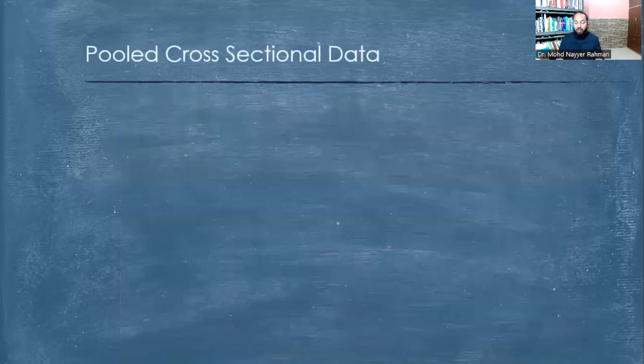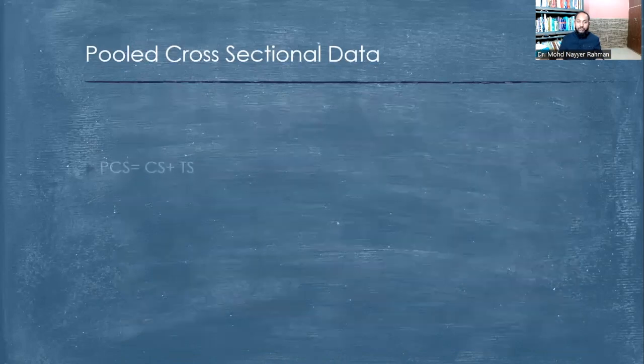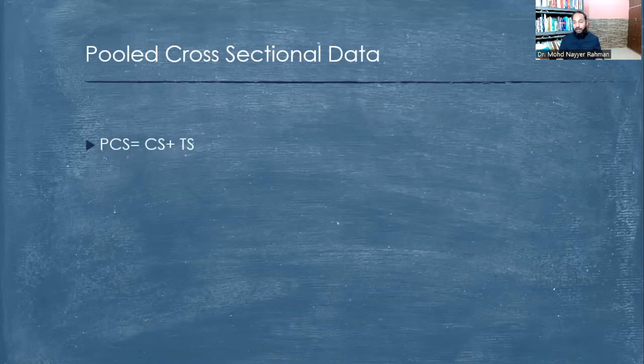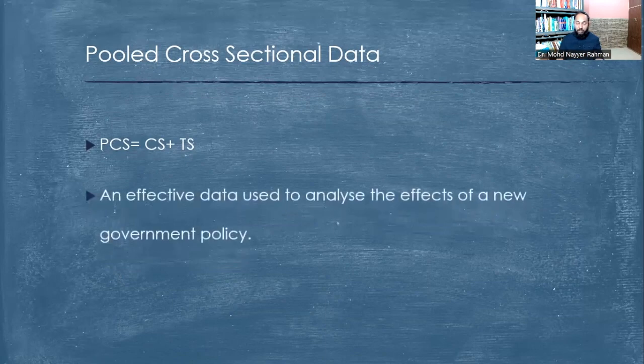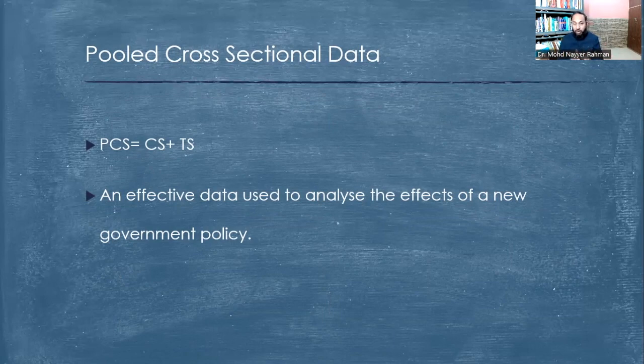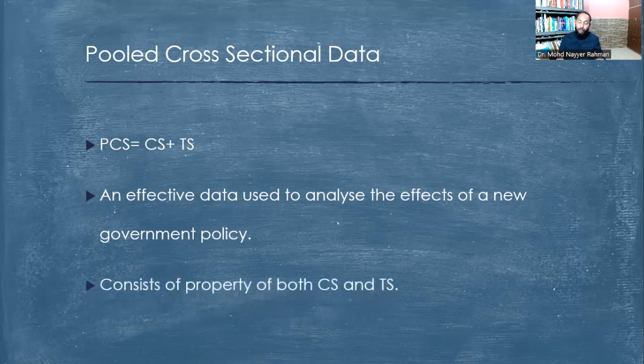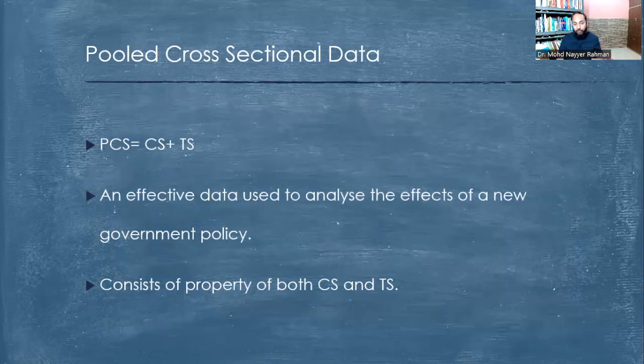The third classification is pooled cross-sectional data, which is a combination of cross-sectional data and time series data. This data is powerful because it has characteristics of both cross-sectional data and time series data. If we have cross-section data and time series data, and we try to merge these two data, the outcome will be pooled cross-sectional data. It has properties of both cross-sectional and time series, and similarly it shares the problems also.